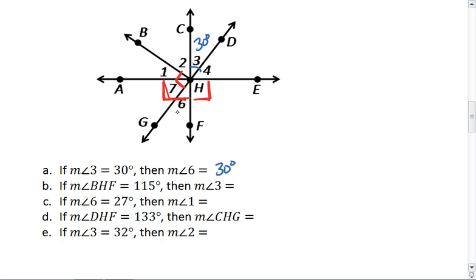Now that we've answered question A, I'm going to erase my blue markings and move on to B. If the measure of angle BHF is 115 degrees, then the measure of angle 3. BHF is 115. It's a little hard to figure out 3 right now, so I'm going to just start figuring out what I can. I know angles 7 and 6 together are 90 degrees, which means the remaining angle, angle 1, has to be 115 minus 90, or 25 degrees.